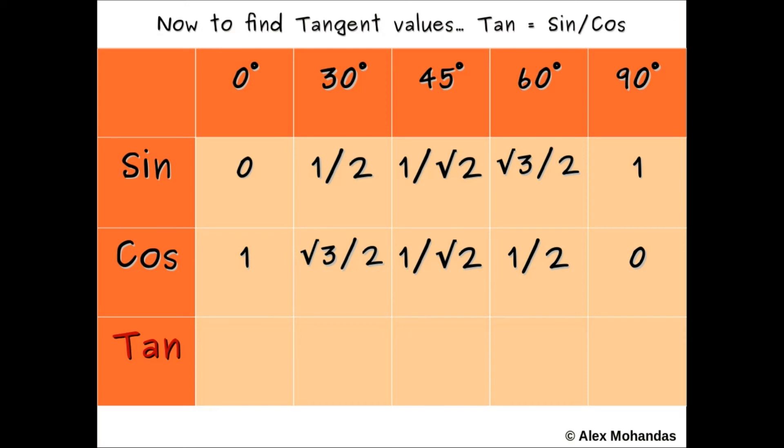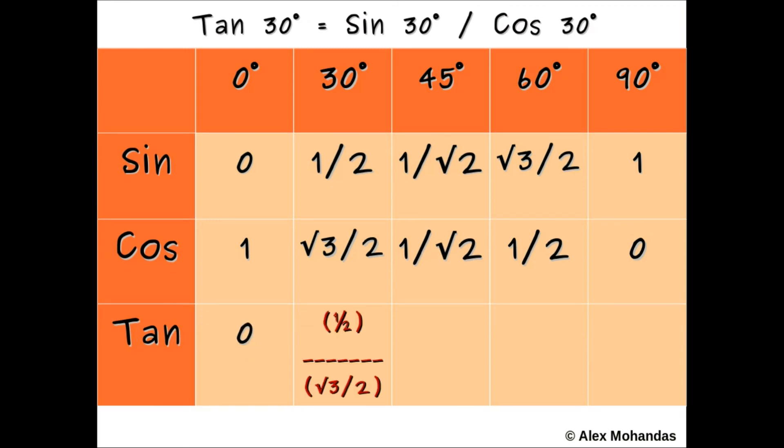To calculate tan values, we have to divide the sine values by the cos value. Tan 0 equals sine 0 divided by cos 0.